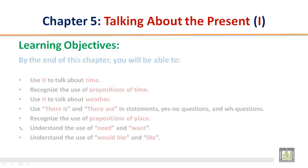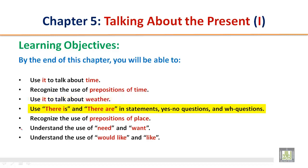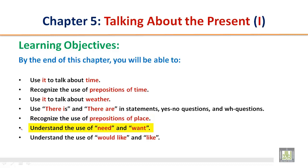Learning Objectives. By the end of this chapter, you will be able to: use 'it' to talk about time, recognize the use of prepositions of time, use 'it' to talk about weather, use 'there is' and 'there are' in statements, yes or no questions and WH questions, recognize the use of prepositions of place, understand the use of 'need' and 'want', and understand the use of 'would like' and 'like'.